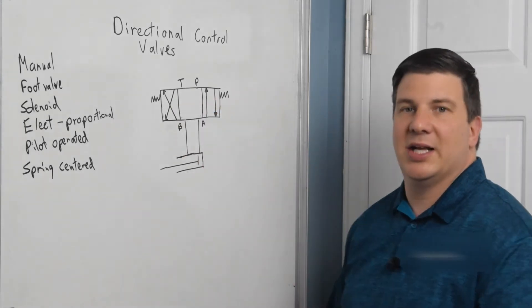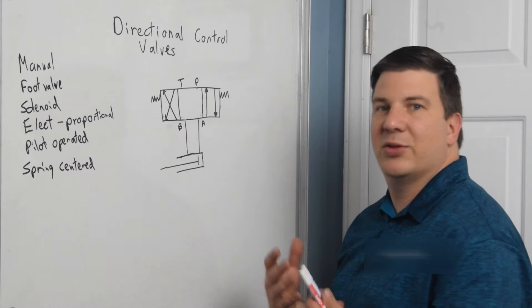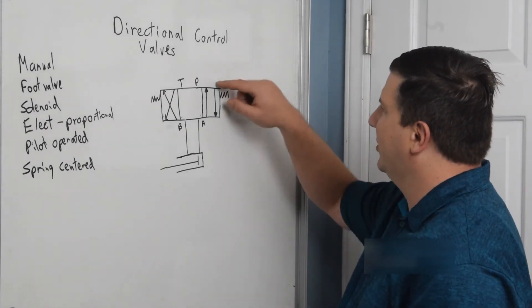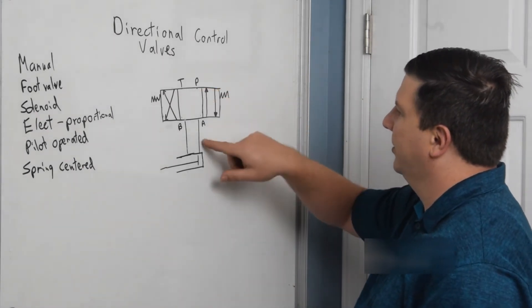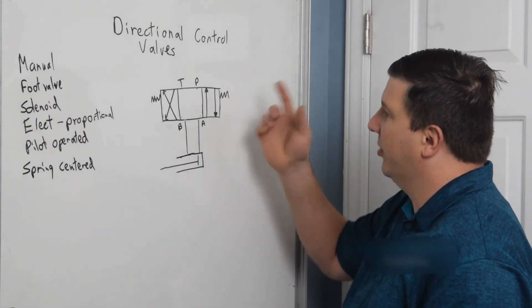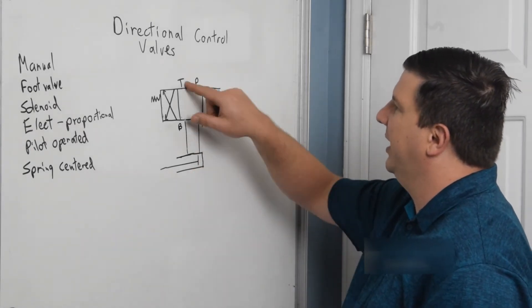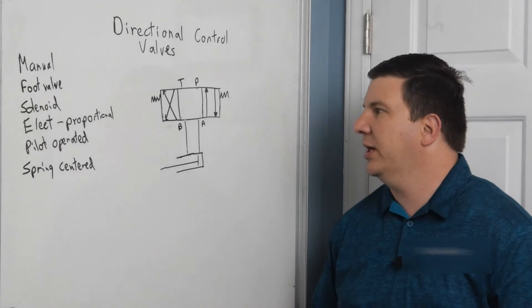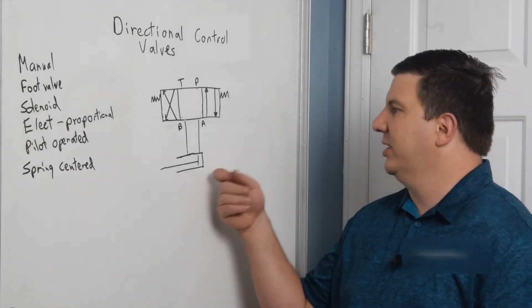That's three positions, four-way, three-position valve. So my pressure can now flow from pressure to A, and my return flow can flow from B to tank. In this case, my cylinder would extend.